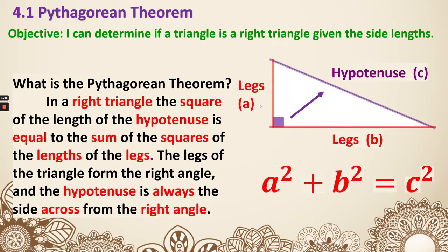So we are saying A squared — this leg squared — plus the other leg squared equals the hypotenuse squared. That is the Pythagorean theorem. The legs of the triangle form the right angle, and the hypotenuse is always the side across from the right angle.